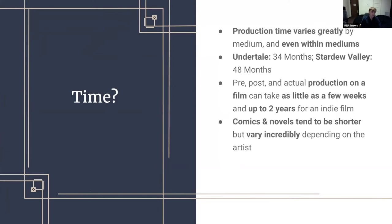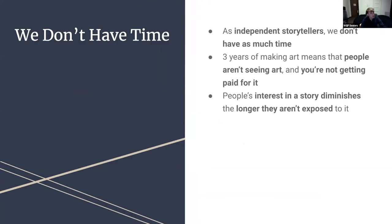Production time for any story can vary wildly, not only between mediums but within them. Toby Fox, who made the popular video game Undertale, took 34 months — doing all the art, writing, programming, and music himself. Stardew Valley, another popular indie game, was developed by a single developer, Eric Barone, and took 48 months. Film can take anywhere from a few weeks to a couple of years. As independent storytellers, we don't have as much time as better-supported artists. People's interest in a story diminishes the longer they aren't exposed to it, so we're trying to cut down production time as much as possible.